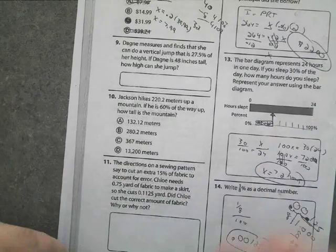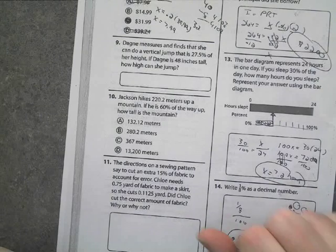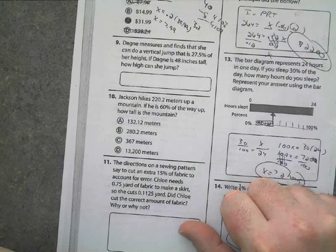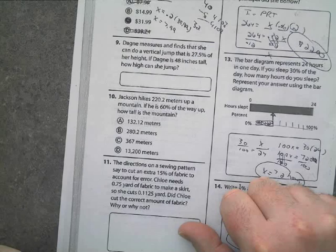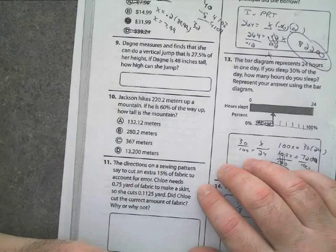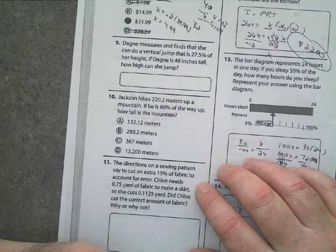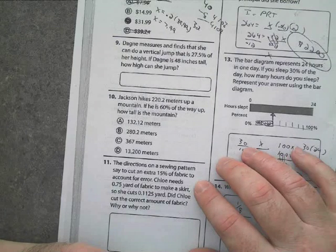Okay, my next one, number nine. Dagny measures and finds that she can do a vertical jump that is 27.5% of her height. Of her height. If Dagny is 48 inches tall, how high can she jump? She's saying she can't jump her whole height, but she can jump 27.5% of her height.